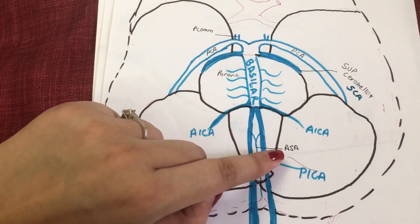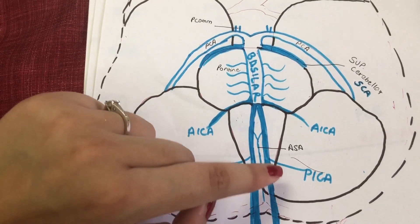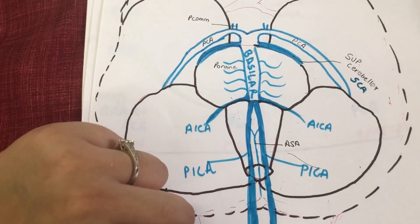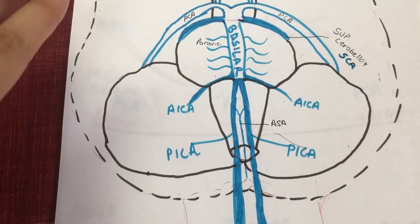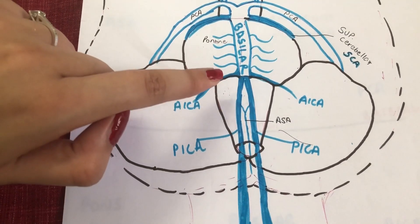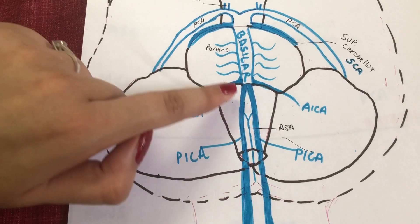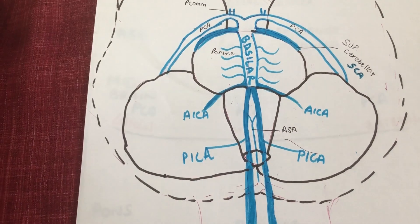The ASA exits the caudal medulla and enters the spinal cord. We'll talk about the ASA in a bit, but you can see the two vertebral arteries have ascended upwards, and here at the pontine medullary junction they have both combined together to form the basilar artery.